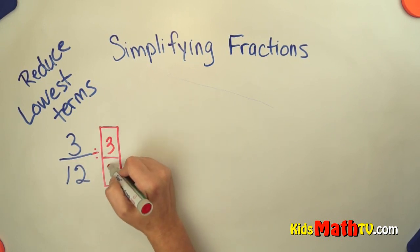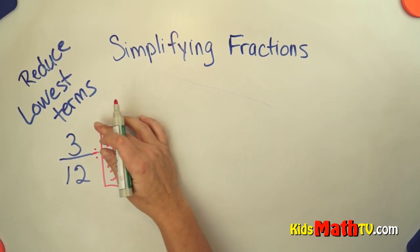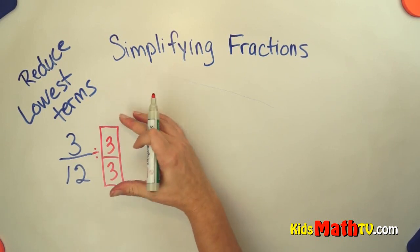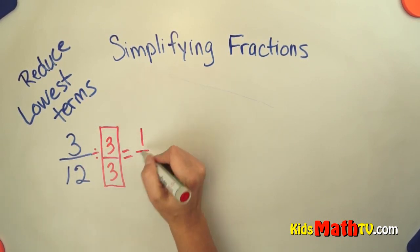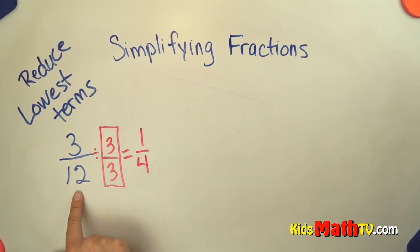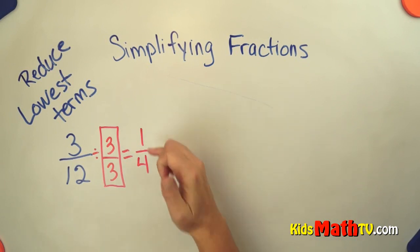But I have to make this into 1 so it's 3 over 3. So I'm actually dividing by 1 which is 3 over 3. 3 divided by 3 is 1. 12 divided by 3 is 4. So if we simplify 3 twelfths into lowest terms it is 1 fourth. There's no other number that will divide 1 and 4 other than 1 itself. So this is now in lowest terms.